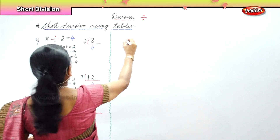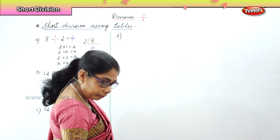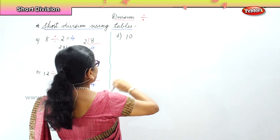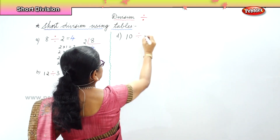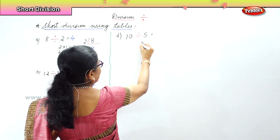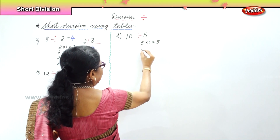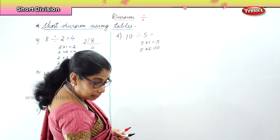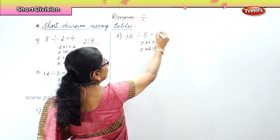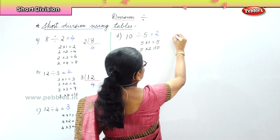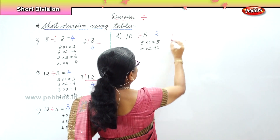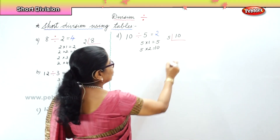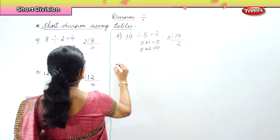Next sum: ten divided by five. We must know the five times table: five ones are five, five twos are ten. So five goes into ten two times. In short division, you put the ten inside and the five outside. Five goes into ten two times — the answer is two.